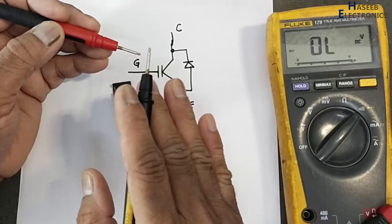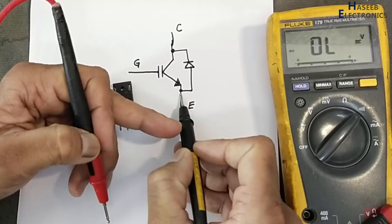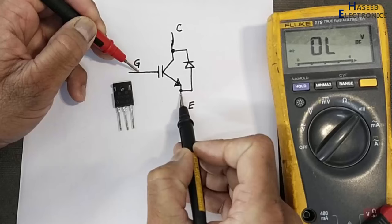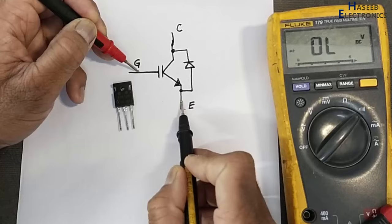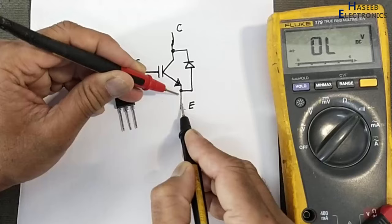If we place black lead at emitter, red lead at gate, that time it will provide gate charging voltage. When it will receive positive voltage here with reference to emitter, because we are applying battery here, when it will receive charging voltage, its gate will charge, gate capacitance will activate.